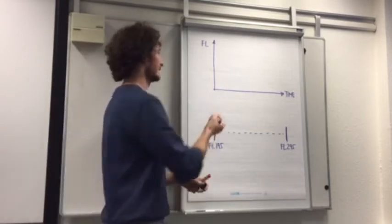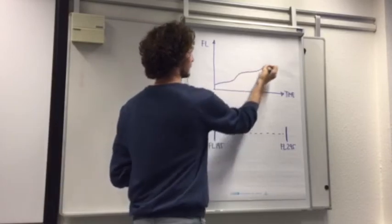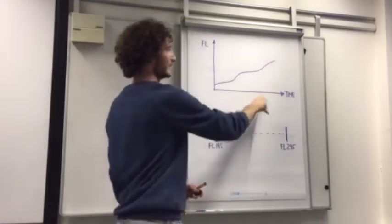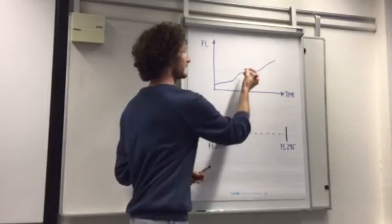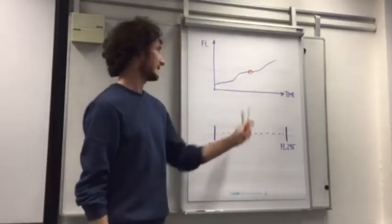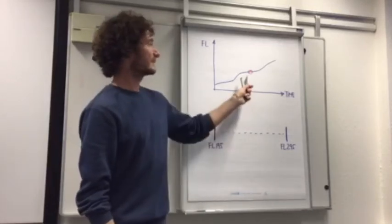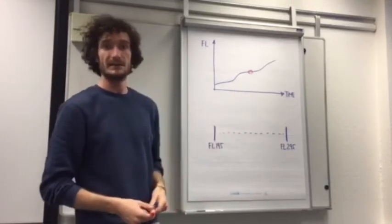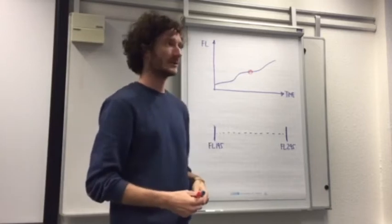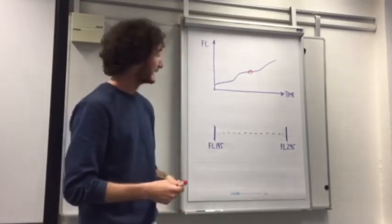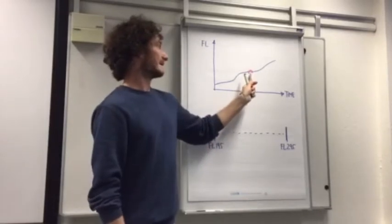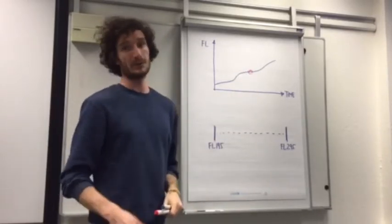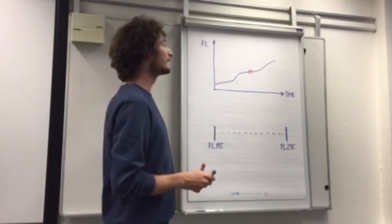The data we were looking at are climbing flights which look basically like this flight level over time. From each of these flights we picked 16 random sample points, for example this point. At this point the flight sent mode Sierra data down to Earth, the same data which are also available via the OpenSky network, and the task was to generate and calculate features from these data.